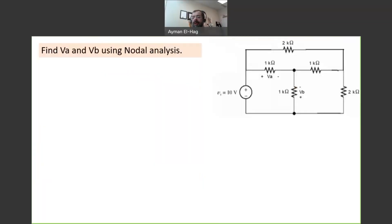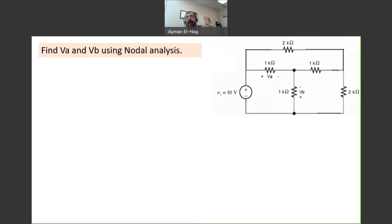Hi everyone, and welcome back to this series of practice problems in circuit analysis. In this question, we would like to use Nodal analysis to solve a previous question that we solved using KCL and KVL. We want to find again VE and VB. We want to see, compared to the previous Nodal question when we have only independent current sources, is there any change in the procedure? Also, we want to compare the complexity compared to KCL and KVL, because we ended up having five equations using that method.